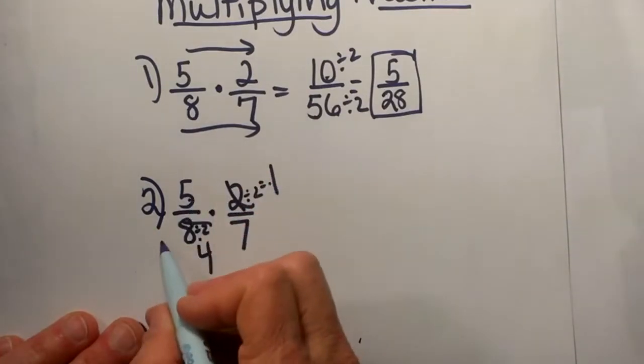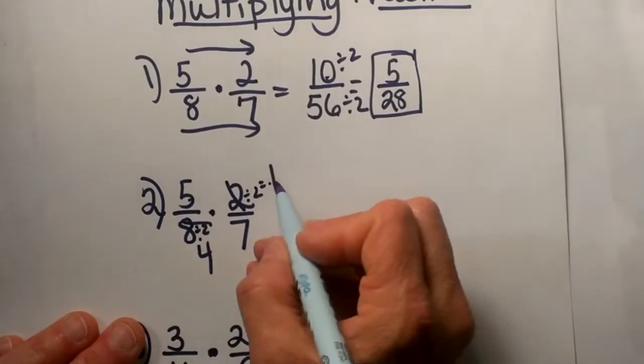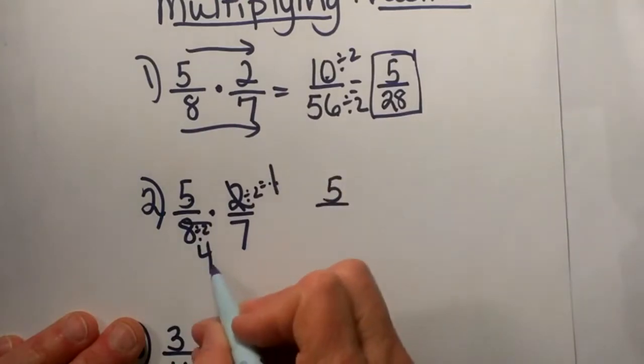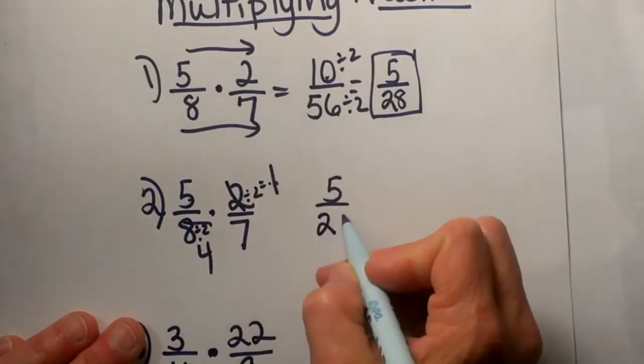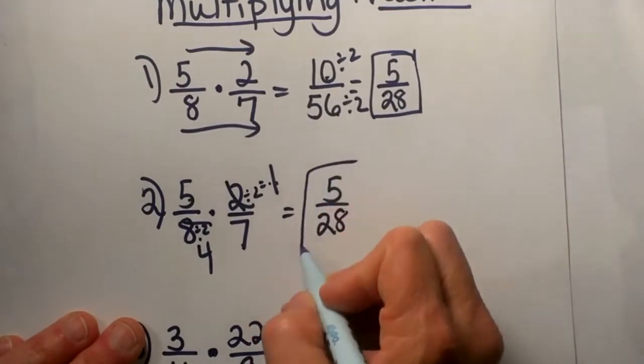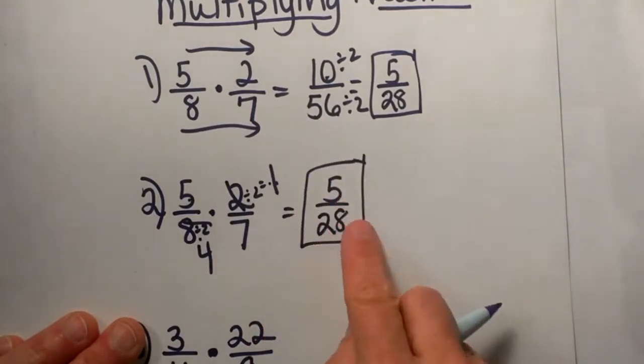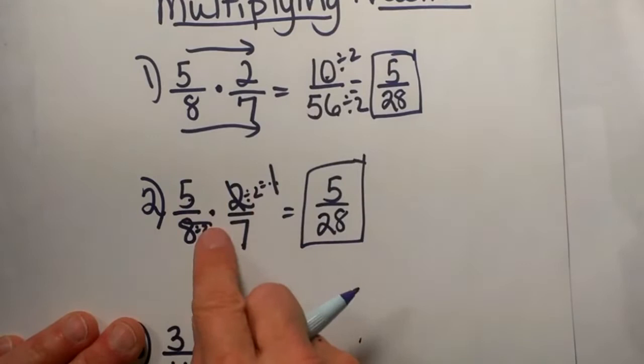Now once you've reduced, you can take the new factors and multiply them together. So 5 times 1 is 5, and 4 times 7 is 28, and we get the same answer, but we don't have to do that reducing step because we do it before we multiply.